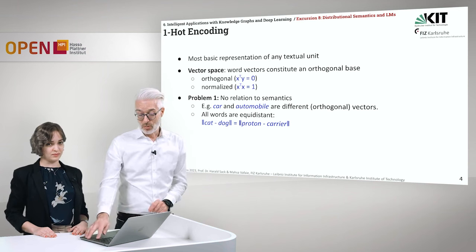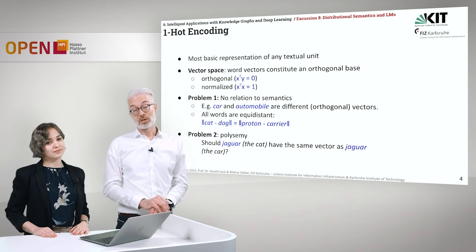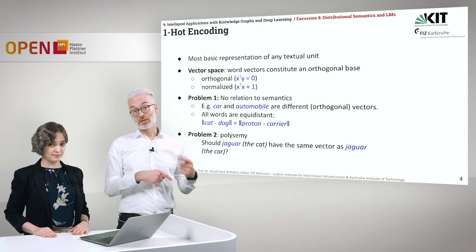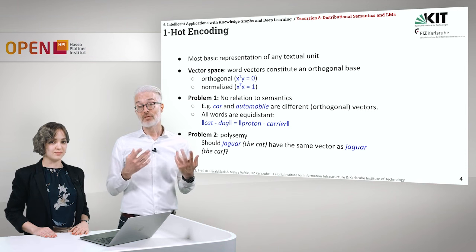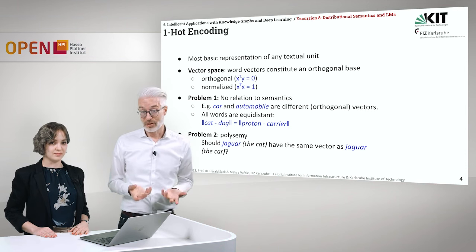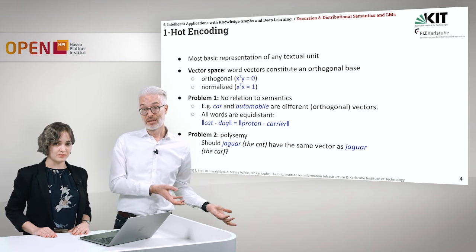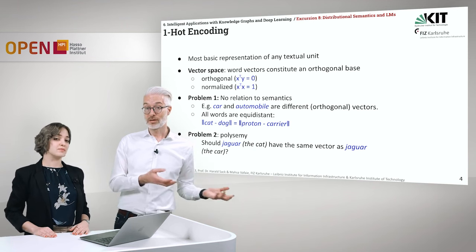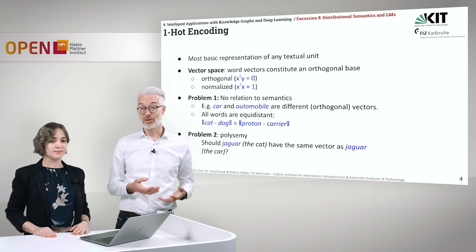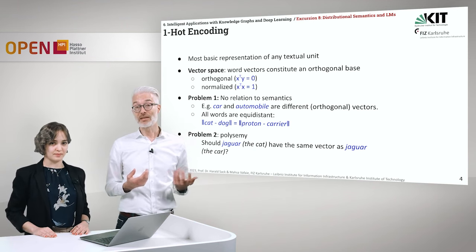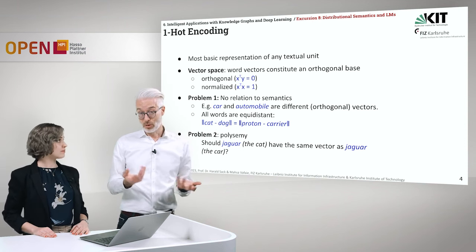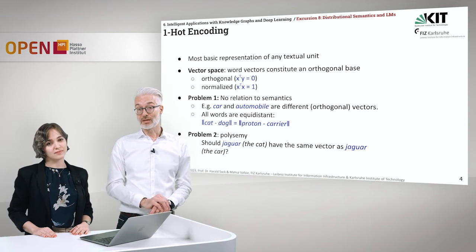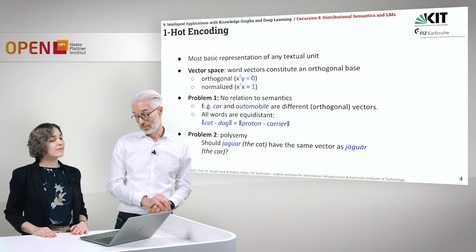That is problem number one. Problem number two goes the other way around. If you have a word like 'Jaguar the cat', it has exactly the same vector as 'Jaguar the car', because you don't distinguish different entities — you only have the word. Polysemy is an issue, and these two things cannot be covered.